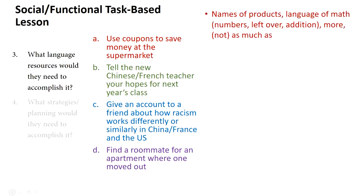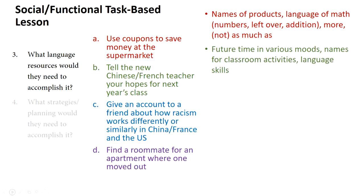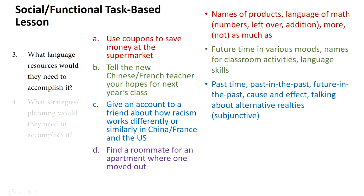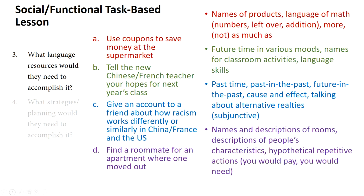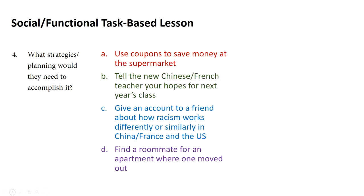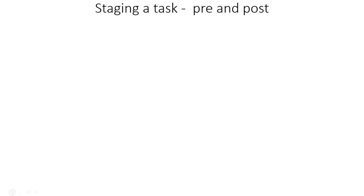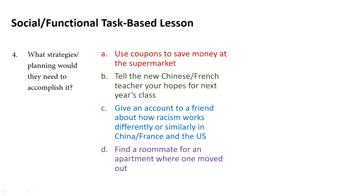What are the language resources they would need to accomplish it? You would analyze the task and ask: what vocabulary would they need? What grammatical frames would they need? What kinds of structures would they need? I have some examples of the kinds of language structures that might come in handy for these tasks, and you want to pick ones appropriate for the level of your learners. Finally, after identifying the social task, the moment of proof, and the language structures needed, ask: what strategies or planning would they need to accomplish it? Sometimes giving learners a little guidebook or step-by-step diagram helps along the way.